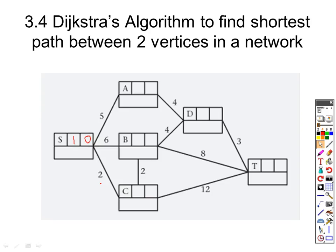Now there are three possible directions I can go from s. I can go up to a which will take me 5, so I'll put a 5 there. We can go down to b which will take me a journey of 6, or we could go to the bottom to c which will give me a journey of 2. I want to pick the smallest one of those. The smallest one is c, so this will be our second point. I'll put a 2 there, and our total journey time at c is 2.